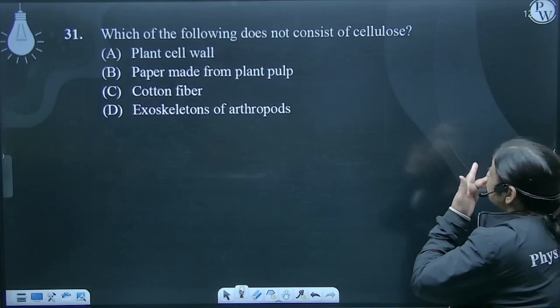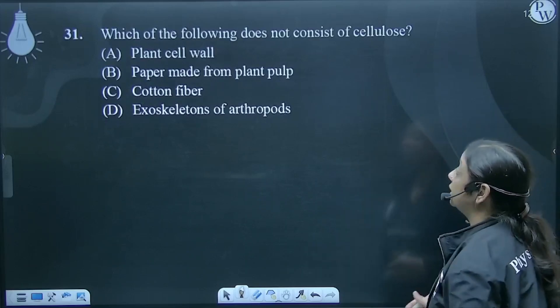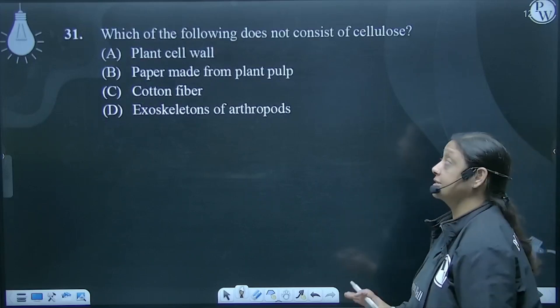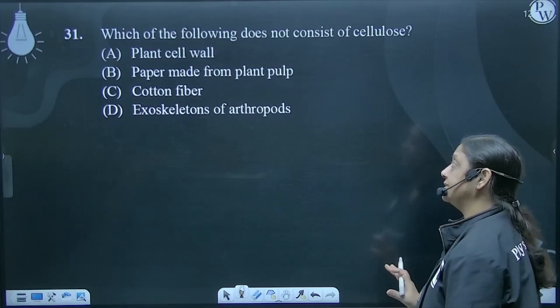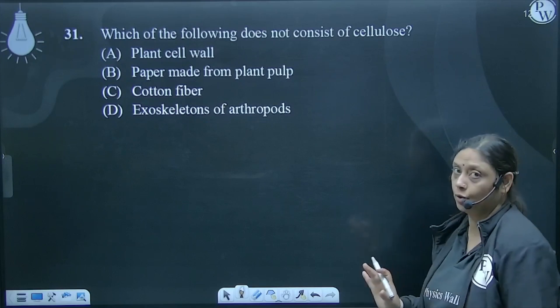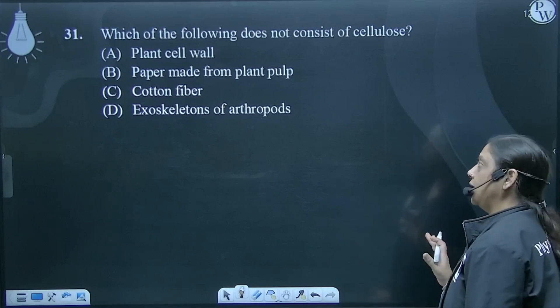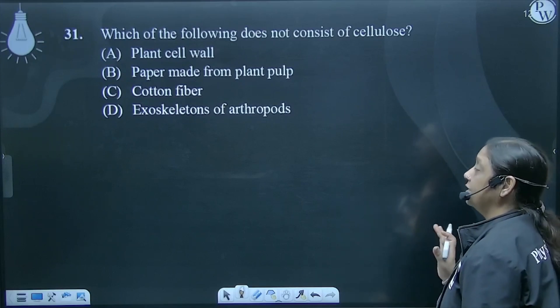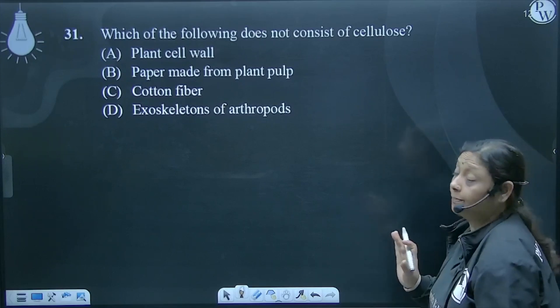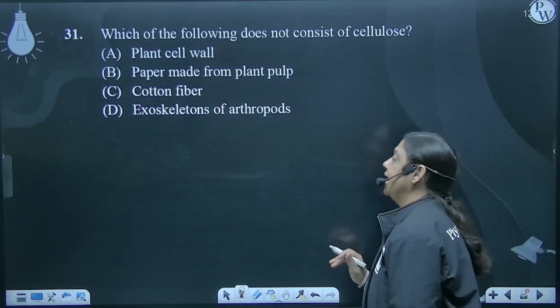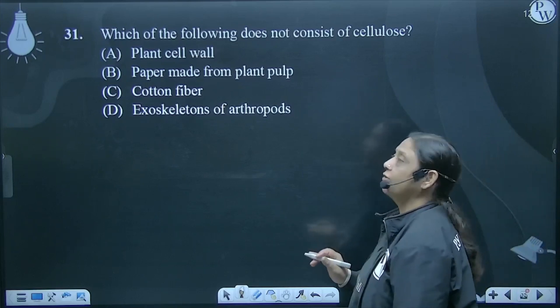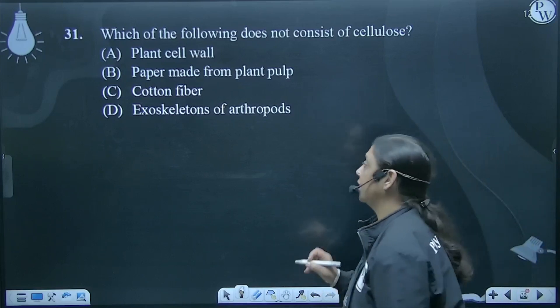Which of the following does not consist of cellulose? Cellulose plant cell wall mein hai, bilkul hai. Paper mein hai, pulp mein hai, cotton fiber mein hai — saab plant products hai. Exoskeleton of arthropods mein nahi hai.